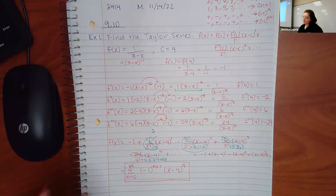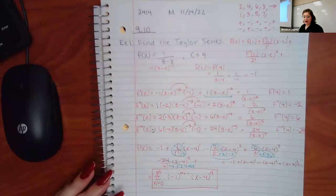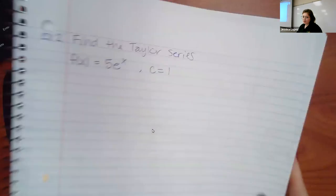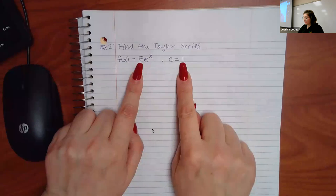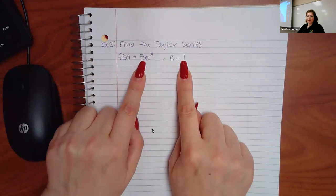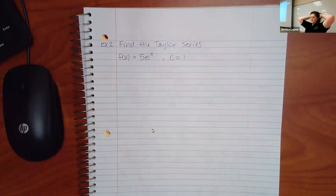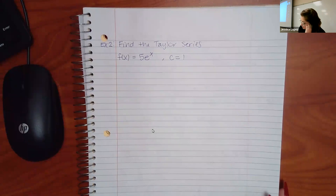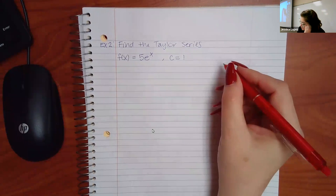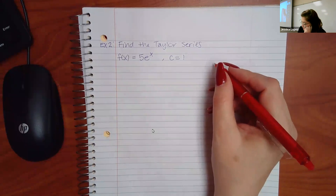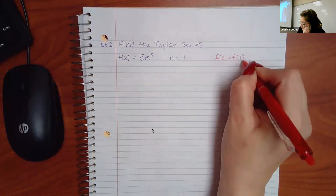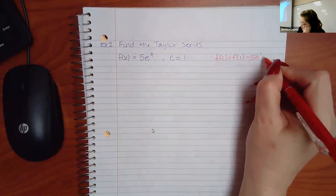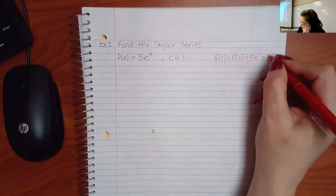The next one, which I thought was going to be crazy but turned out not to be — that is the last problem in your homework. Yours might have a different number, but the e^x part is the same for everyone. Again I'm going to find F(C), which in this case is F(1). When you plug in 1 for x in 5e^x, you just get 5e.